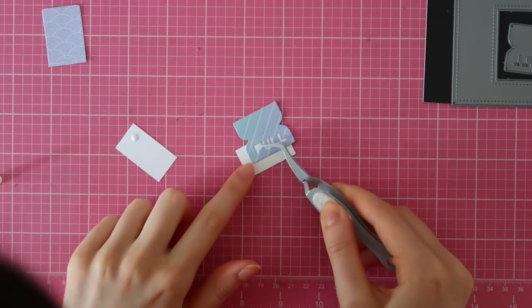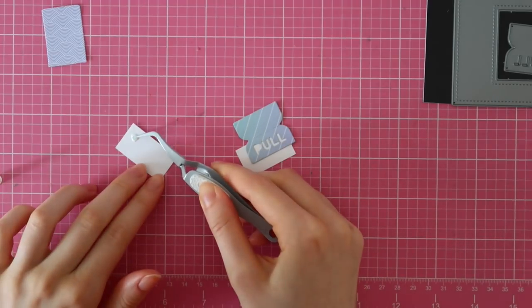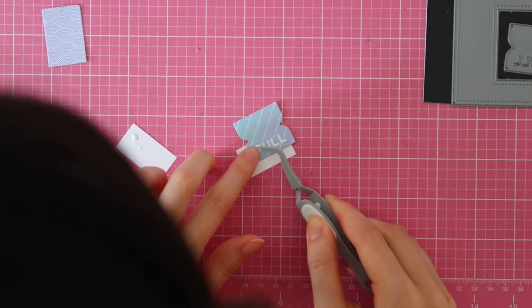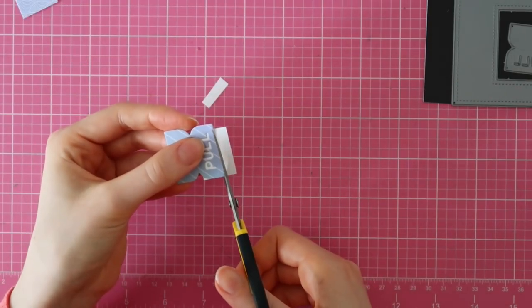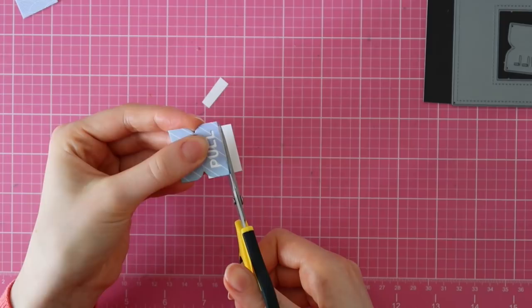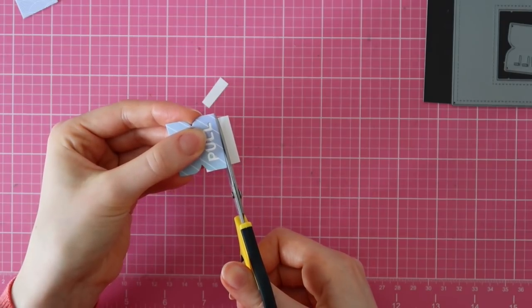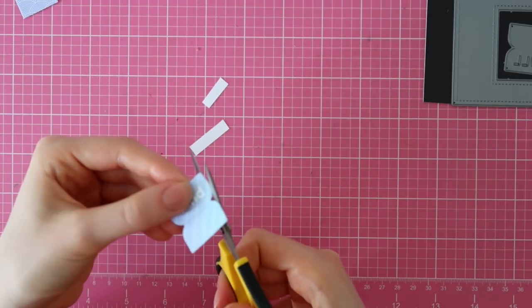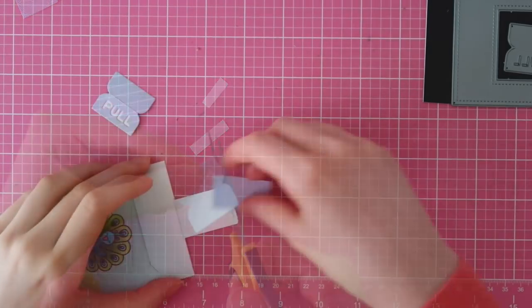I'm also going to adhere that really really tiny little piece that comes with the pull tab die, so I saved that when I die cut it. Make sure to keep those little pieces because you will need that little thing over there to finish off that pull tab.